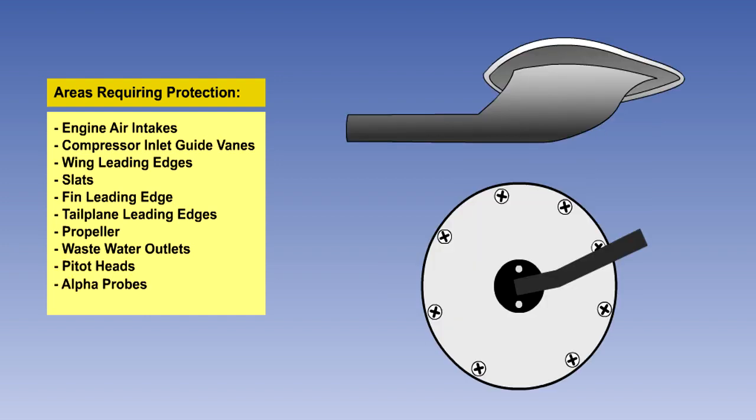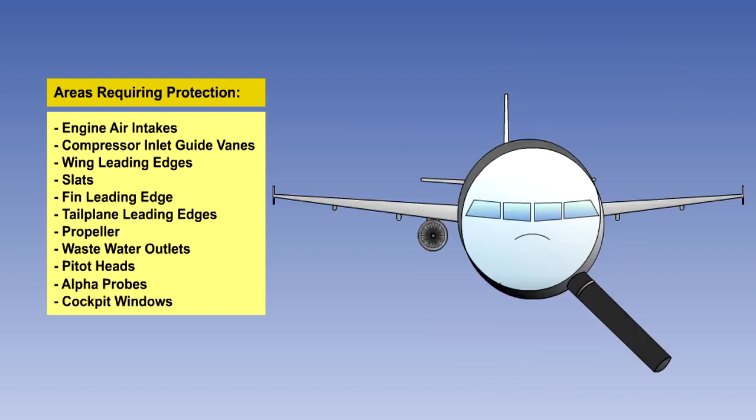Any probes sticking out into the airflow, such as pitot heads and alpha probes, are susceptible to icing and need to be protected. These small components are usually electrically heated. Finally, cockpit windows need to be protected from both ice and rain.